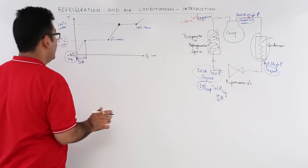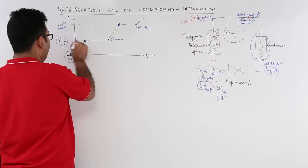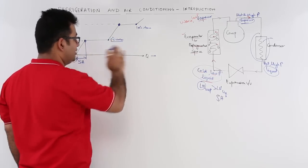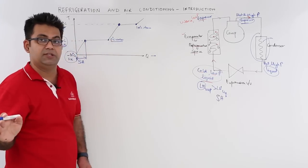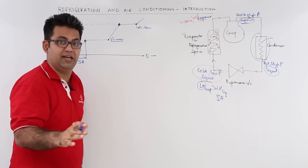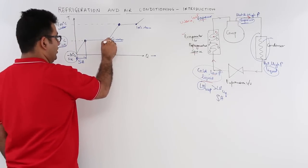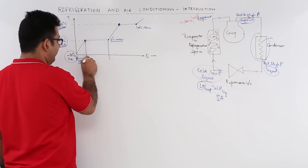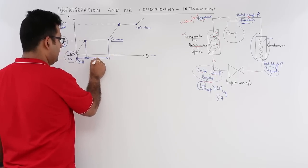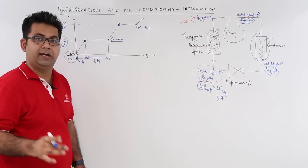Sensible heat is that heat in which the temperature change occurs but the phase change does not occur. In moving from 0 degree Celsius ice to 0 degree Celsius water, there is no temperature change but there is a phase change from ice to water. Whatever heat that we have added or taken out in this case is called latent heat.